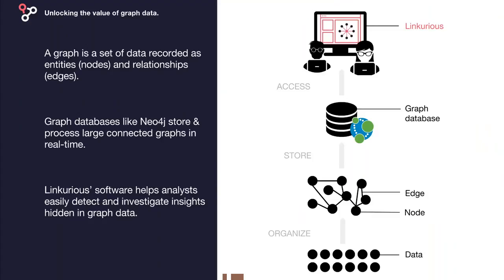What do we mean by unlocking the value of graph data? Our customers have data in various formats like Excel files, SQL databases, and so on. The first thing is they model this data as a graph of entities — nodes — and relationships, called edges. They then move this data inside a graph database like Neo4j, which helps store and query large graphs. The Linkurious software makes this data and the power of Neo4j accessible to non-technical users. With our easy-to-use interface, they can monitor, investigate, and detect insights hidden inside their graph data.